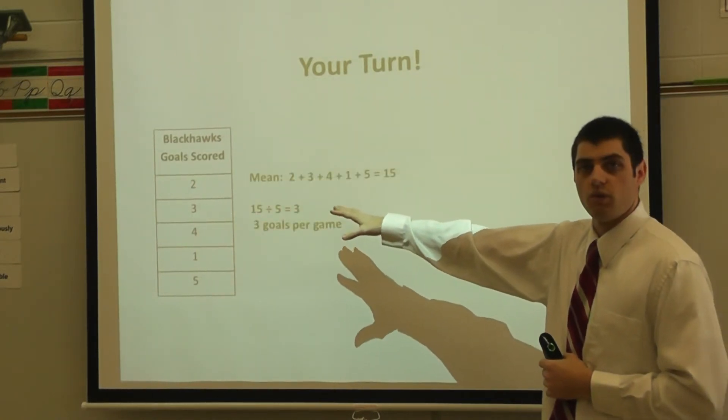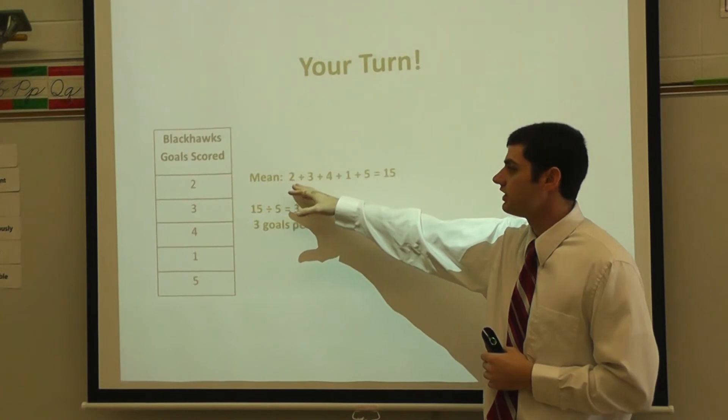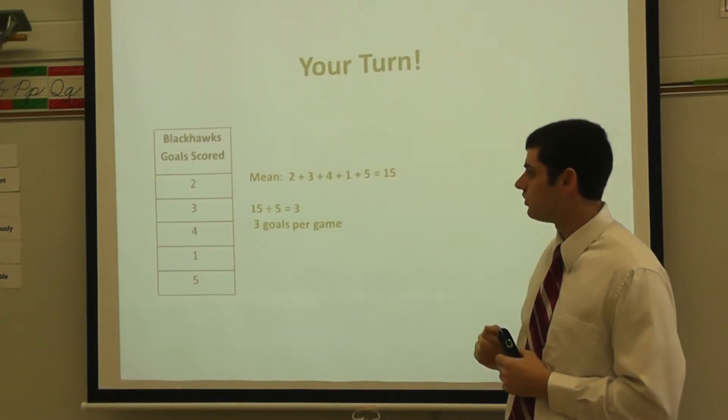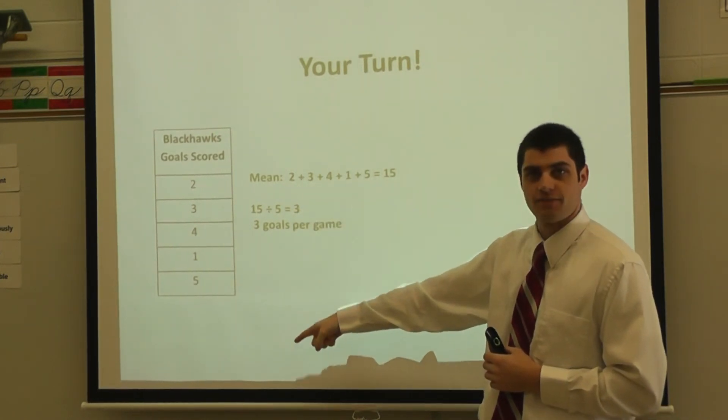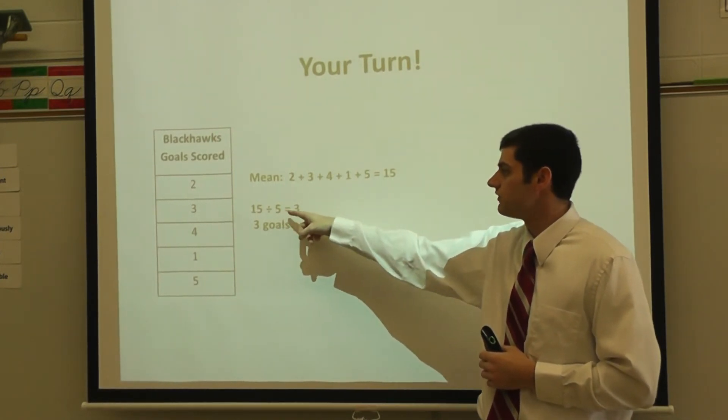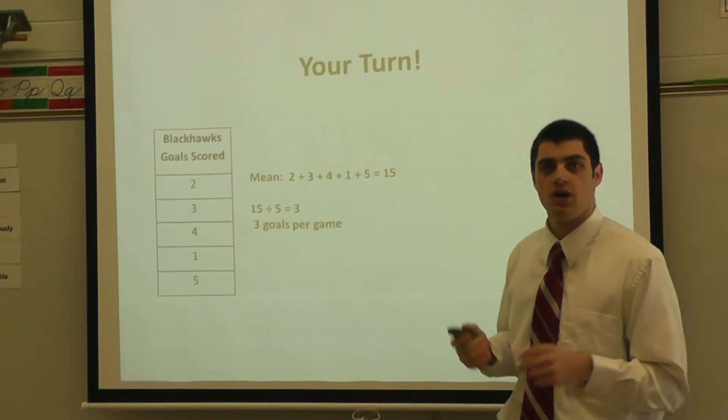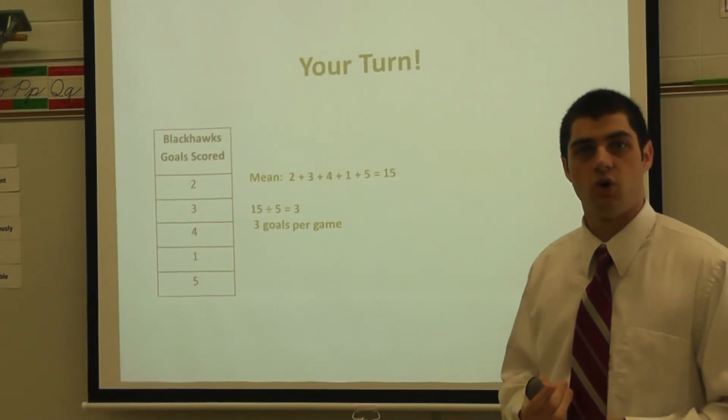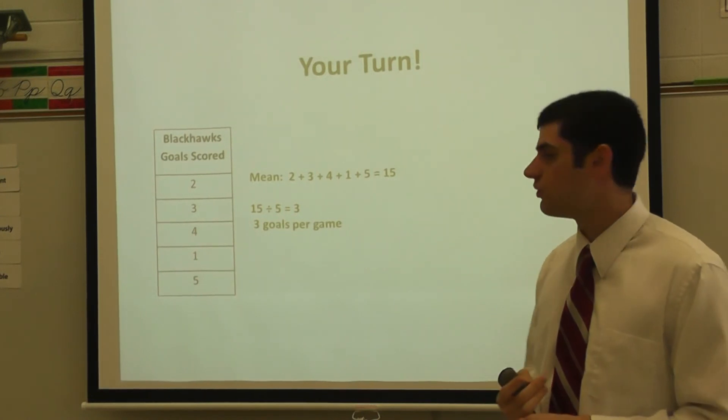Okay. When figuring the mean out here you should have added the total numbers. 2 goals plus 3 plus 4 plus 1 plus 5 equals 15 goals total. There were 5 games that they played. So 15 goals divided by 5 would equal 3, which stands for 3 goals per game. And that was the mean. Hopefully you were able to find it out working through this problem.